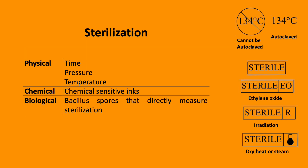It is essential to confirm that sterilisation is complete prior to using equipment on a patient. Therefore, physical, chemical and biological measures can be used to ensure this. Physical measures include adequate time, pressure and temperature monitoring during the process; chemical measures use sensitive inks; and biological measures use Bacillus spores that directly measure sterilisation. There is a range of key labels for sterility and autoclaving.